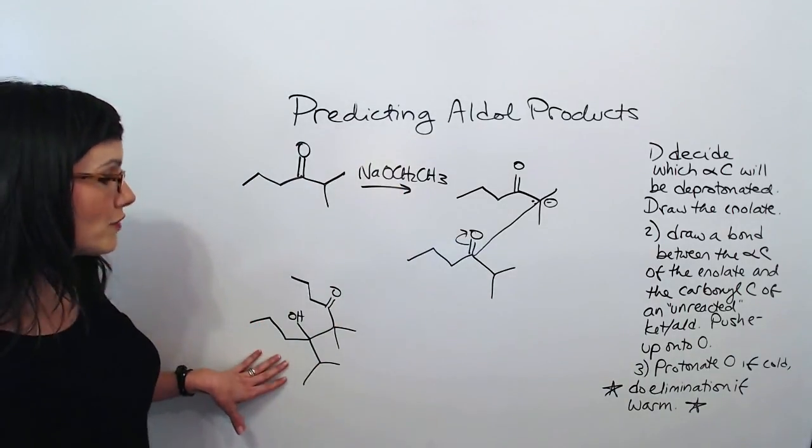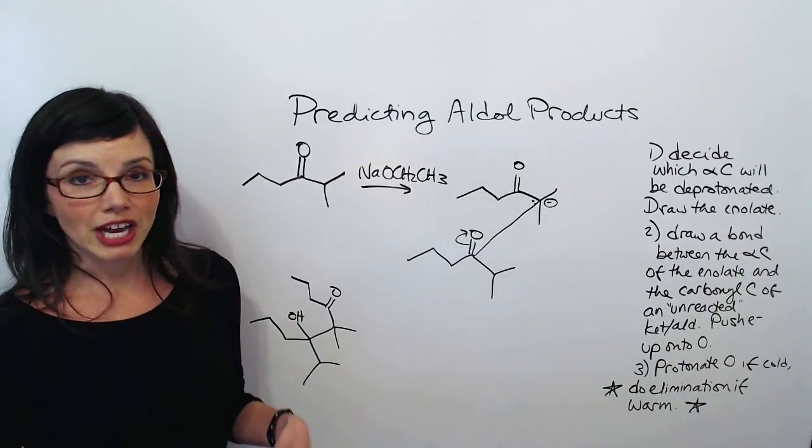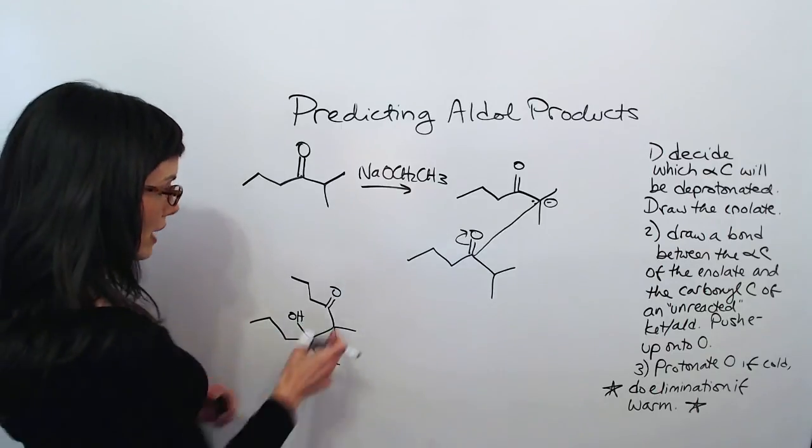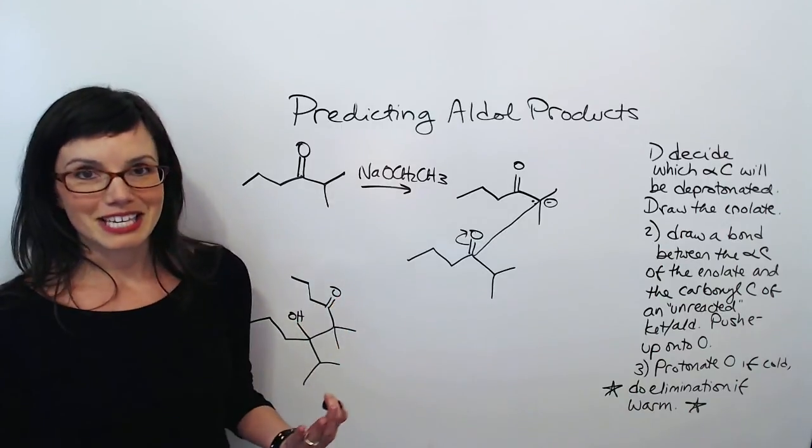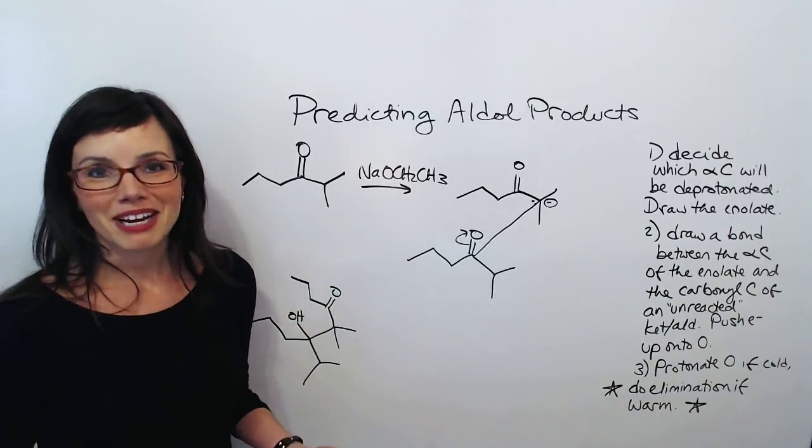Anyway, this is our final product. And if we want to double check, which we should always do, we've got a carbonyl and an OH and we can go O, one, two, three, O. Three C's between the O's. Let's practice another one.